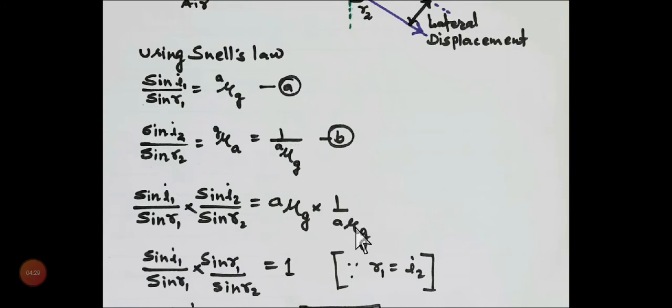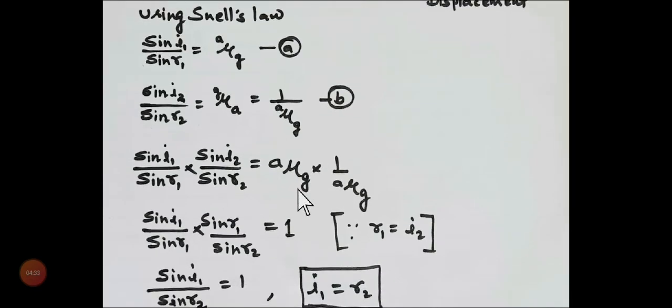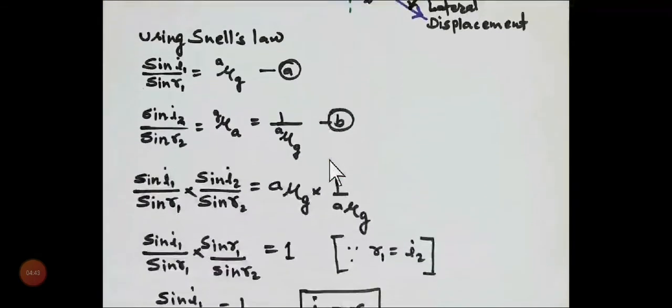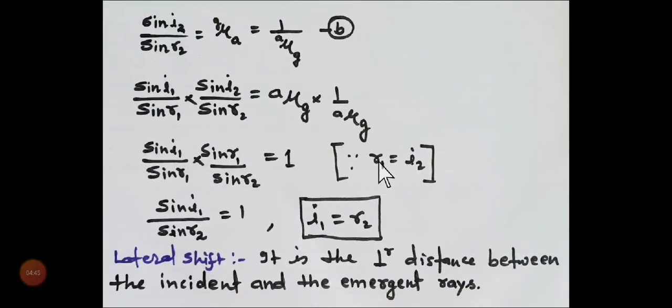Multiply and you can see these two terms will cancel out. And on the left hand side, as I told you, r1 is equal to i2. I'll show you in the figure, r1 is equal to i2 because of alternate interior angles. So sin r1 and sin r1 will cancel out.